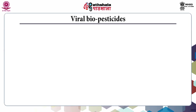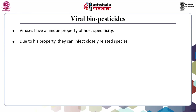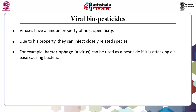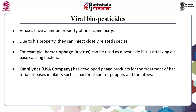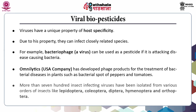The next classification of microbial biopesticides includes viral biopesticides. Viruses have a unique property of host specificity. Due to this property, they can infect closely related species. For example, bacteriophage is a virus that can be used as a pesticide if it is attacking disease-causing bacteria. Omnilytics, a USA-based company, has developed phage products for the treatment of bacterial diseases in plants such as bacterial spot of peppers and tomatoes. More than 700 insect-infecting viruses have been isolated from various orders of insects including Lepidoptera, Coleoptera, Diptera.